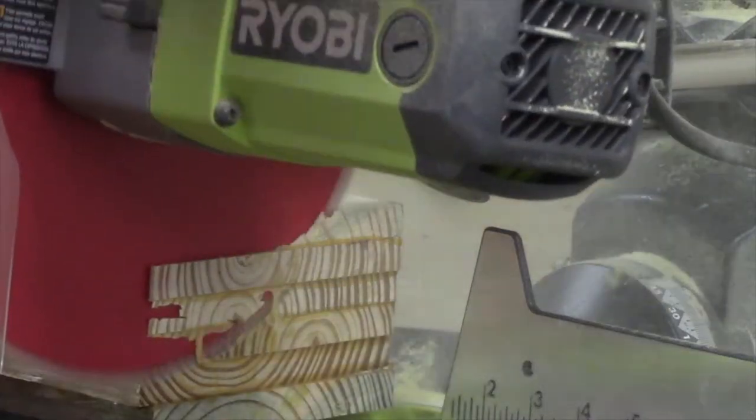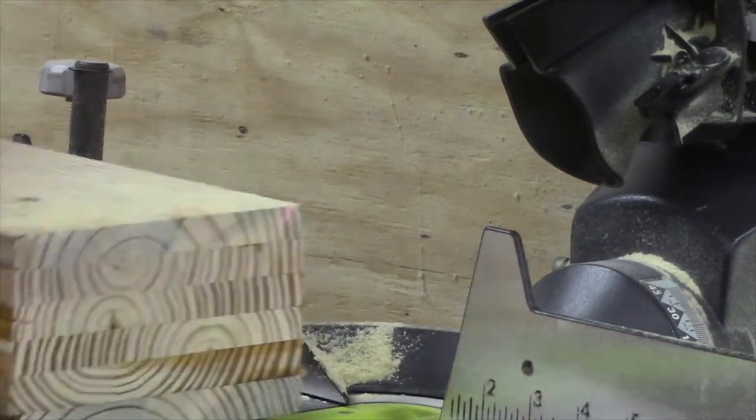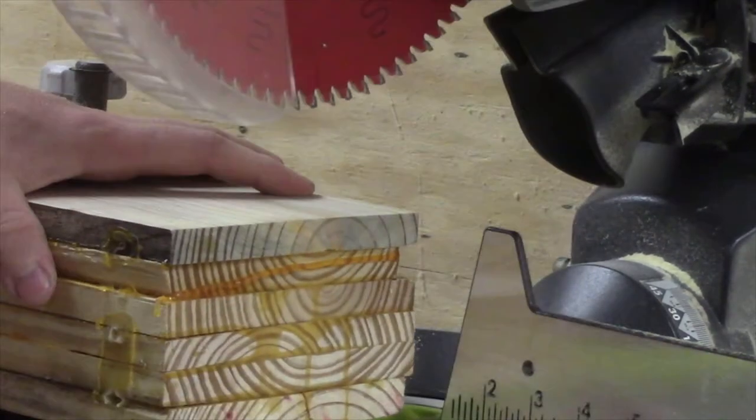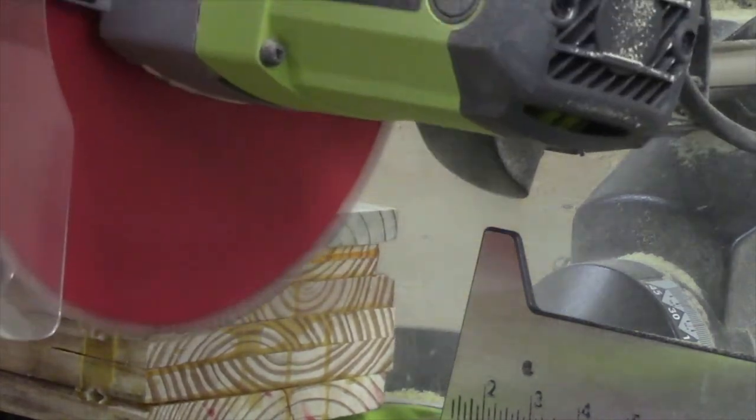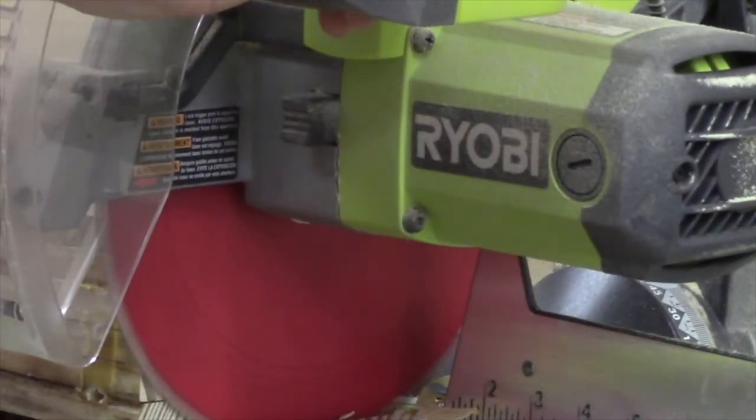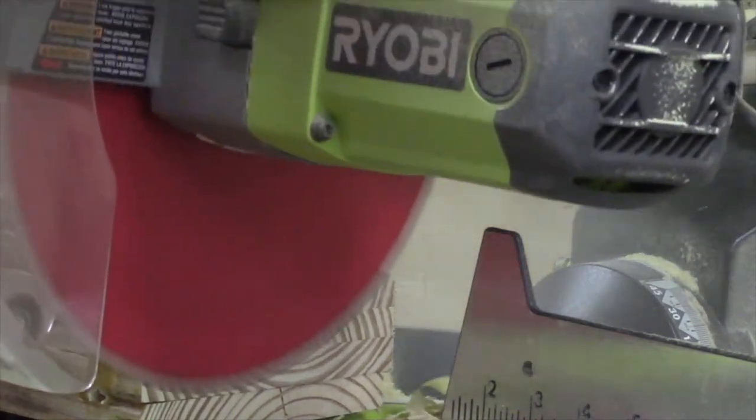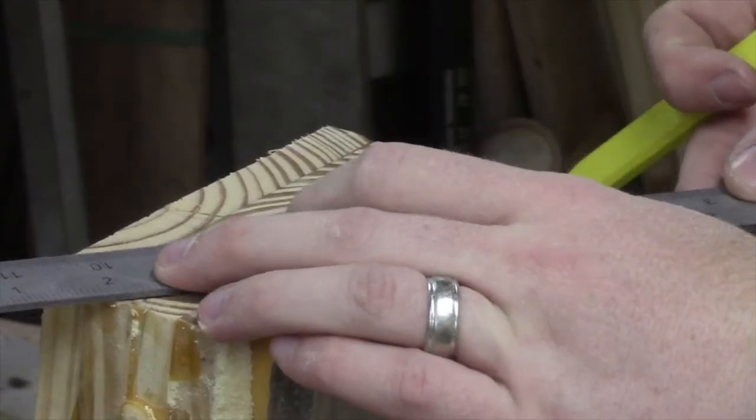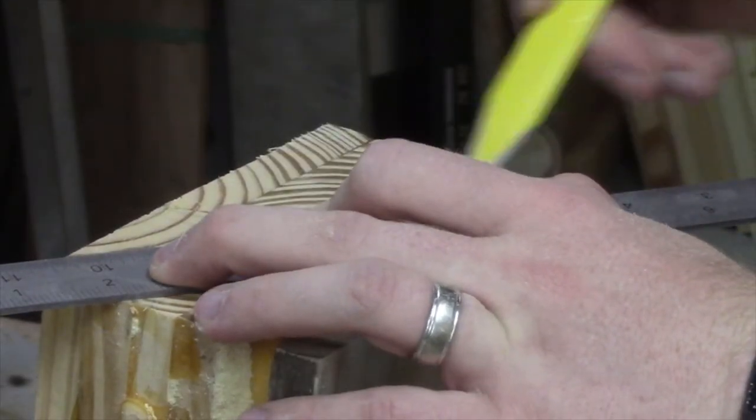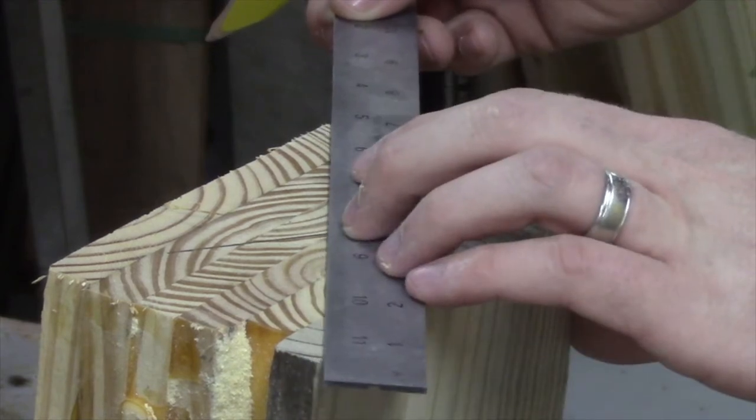After I let that dry, I removed the clamps. Again, I'm finally at the point where I can almost start to turn, and again there is so much prep to this project, more than I expected. Once I finished waiting for the glue to dry, I trimmed the ends flush and square with the miter saw. This way I could mark for center on either side and then mounted to the lathe.